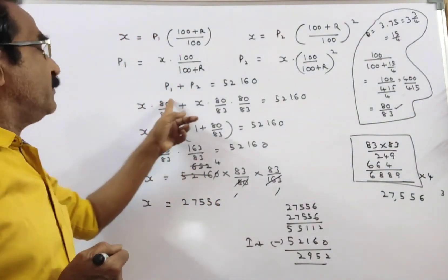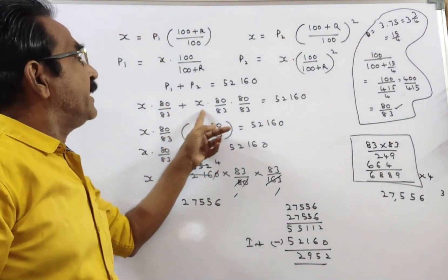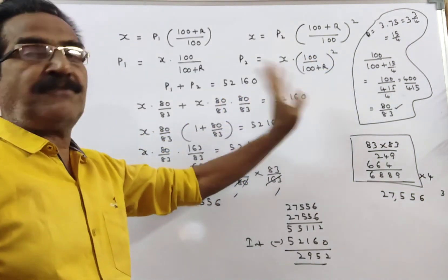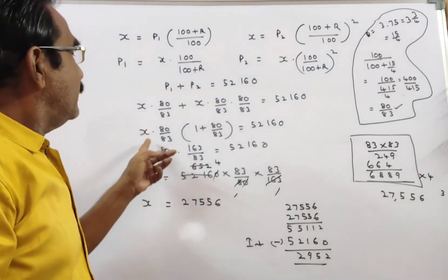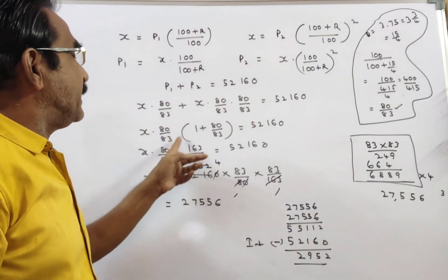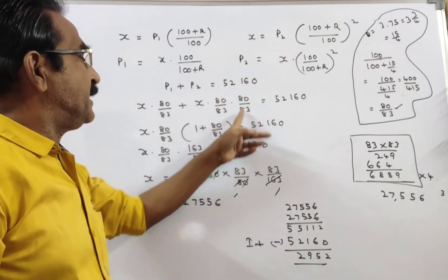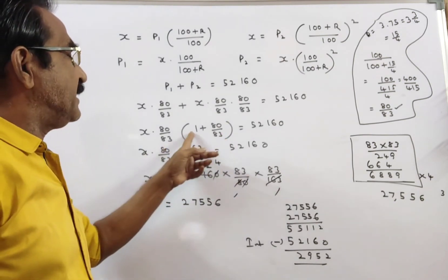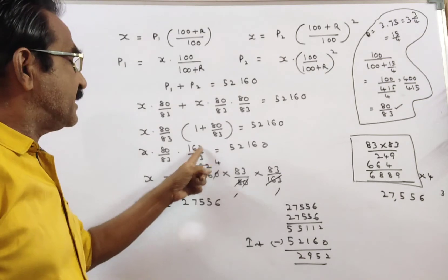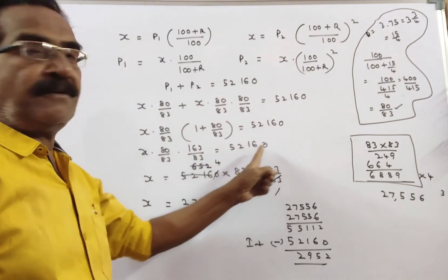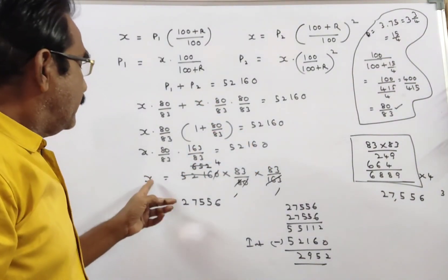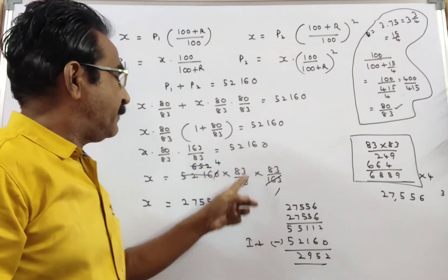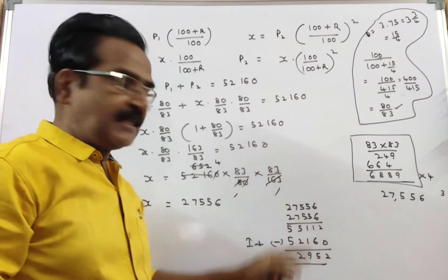So x into 80 by 83 plus x into 80 by 83 whole square is equal to 52,160. This becomes x into 80 by 83 into 1 plus 80 by 83. That implies x into 80 by 83 into 163 by 83 is equal to 52,160. Therefore, x is equal to 52,160 into 83 by 80 into 83 by 163.